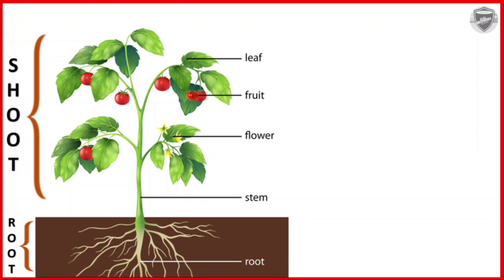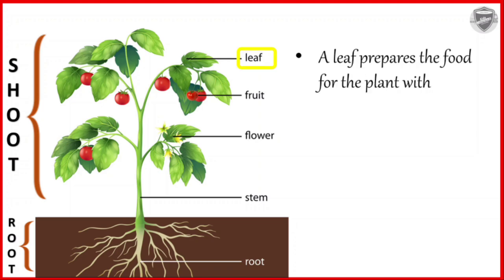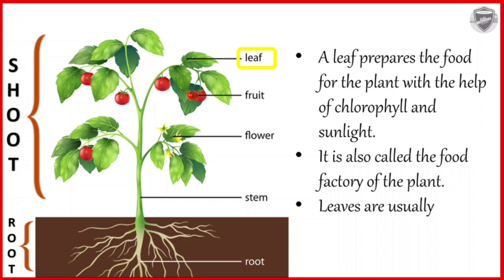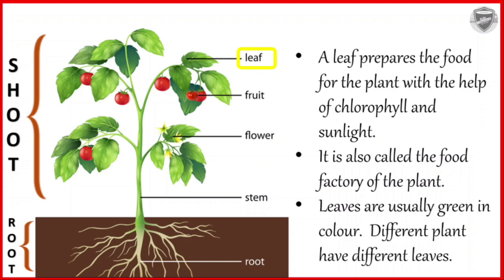Shoot and root. Let us learn about each part in detail. We will start with leaf. A leaf prepares the food for the plant with the help of chlorophyll and sunlight. It is also called the food factory of the plant. Leaves are usually green in colour. Different plants have different leaves.